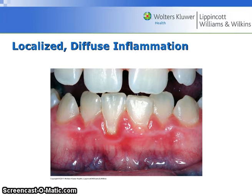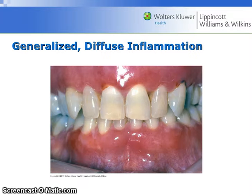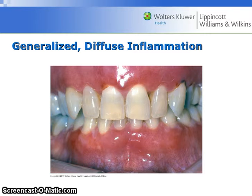This image shows localized, diffuse inflammation. Notice that the redness and edema involve the gingival margin, papilla, and attached gingiva in the mandibular anterior sextant. This image shows generalized, diffuse inflammation, where the inflammation extends to the gingival margin, papilla, and attached gingiva throughout the entire mouth.